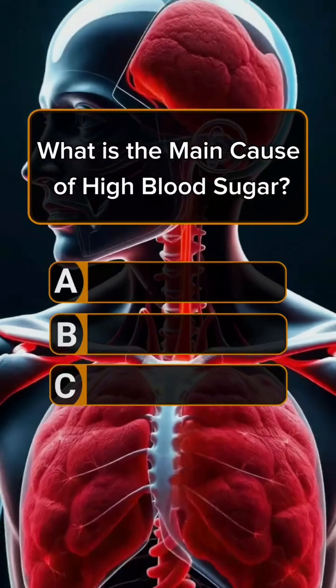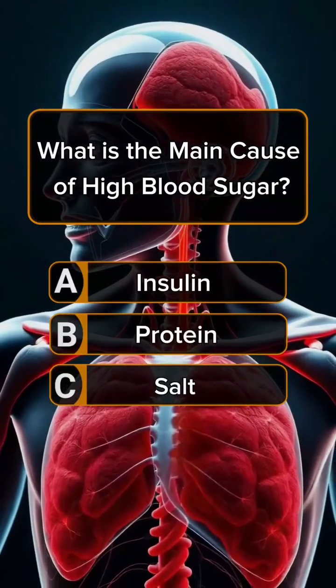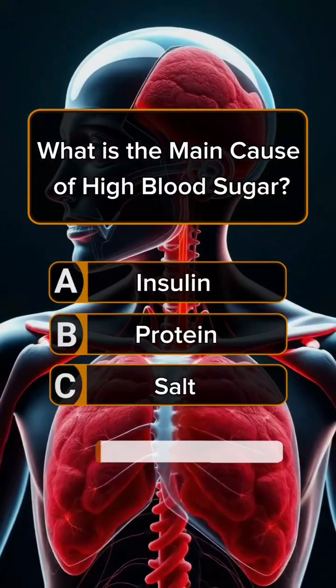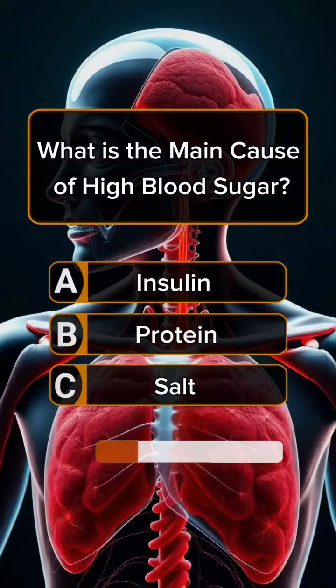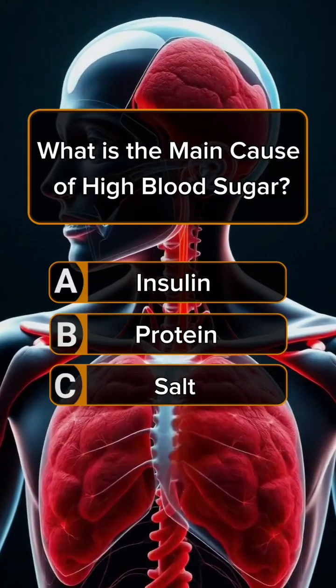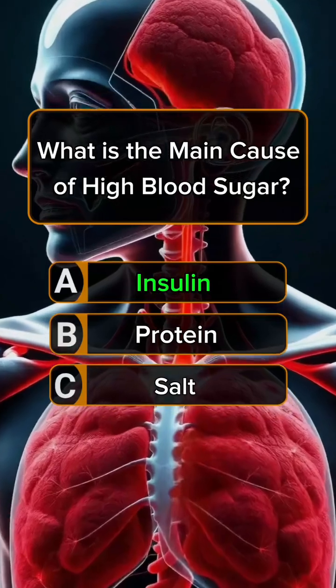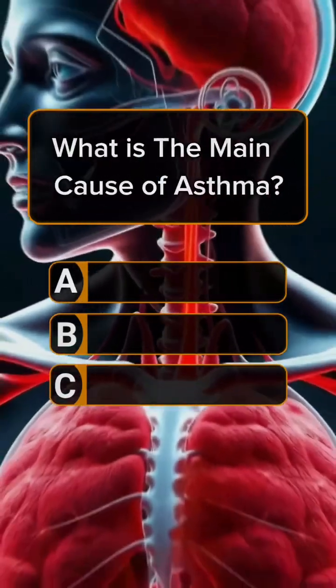Question 10. What is the main cause of high blood sugar? Answer A. Insulin.